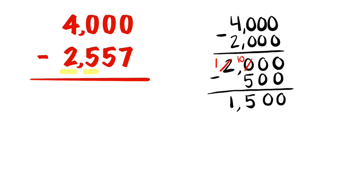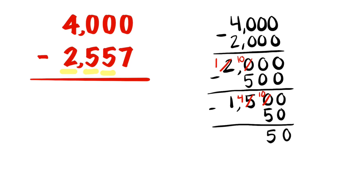Now we're only going to subtract the tens place, which is a 5, which makes 50. 0 take away 0 is 0. 0 take away 5 is impossible. We have to go next door to the hundreds place and take one of the hundreds. Now we only have 400, so we can give that over to the tens place, which means now we have 10 tens that we borrowed from the hundreds. 10 take away 5 is 5. 4 take away nothing is 4. 1 take away nothing is 1.